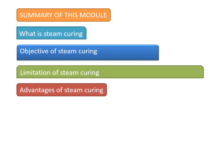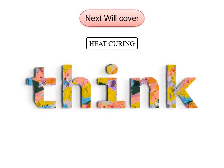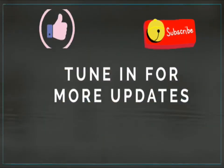To summarize this module: we discussed the definition of curing and steam curing, the objectives and advantages of steam curing, its limitations, and why water curing must follow steam curing — including what happens to compressive and flexural strength at 28 days if it does not. In the next upcoming module we will be discussing heat curing in detail. Thank you very much for watching — tune in for more updates.